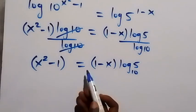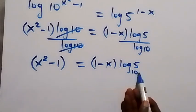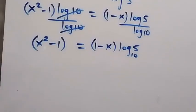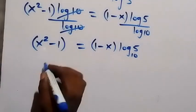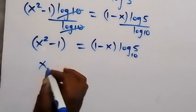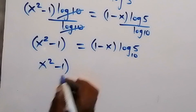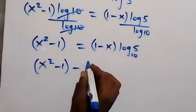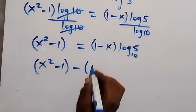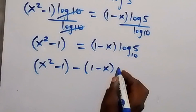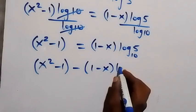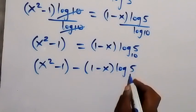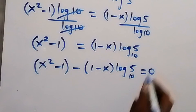In the next step, let's take everything to the left side. This becomes x squared minus 1, minus bracket 1 minus x, times log 5 base 10, equals 0.